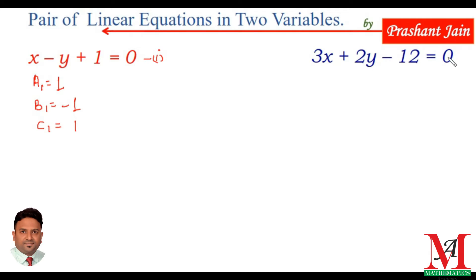Here, in equation number 2, first of all, a2, that is the coefficient of x, is 3. b2, coefficient of y, is 2, and c2 is the constant term, which is minus 12.